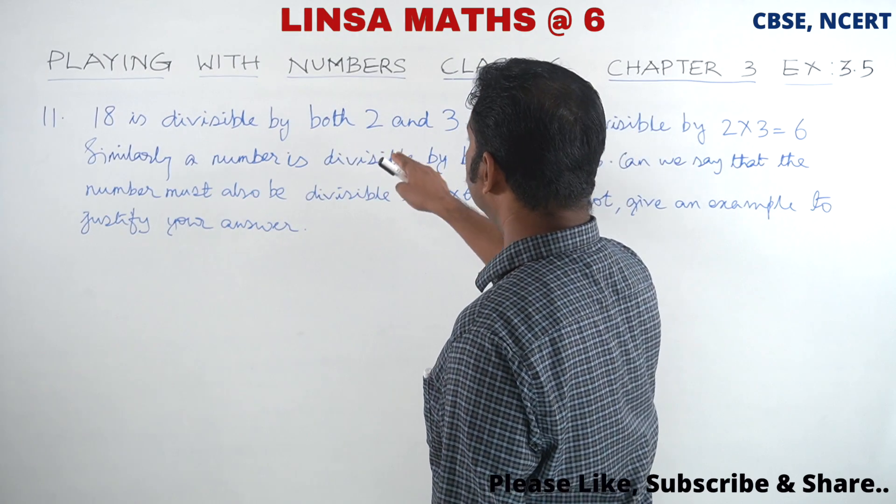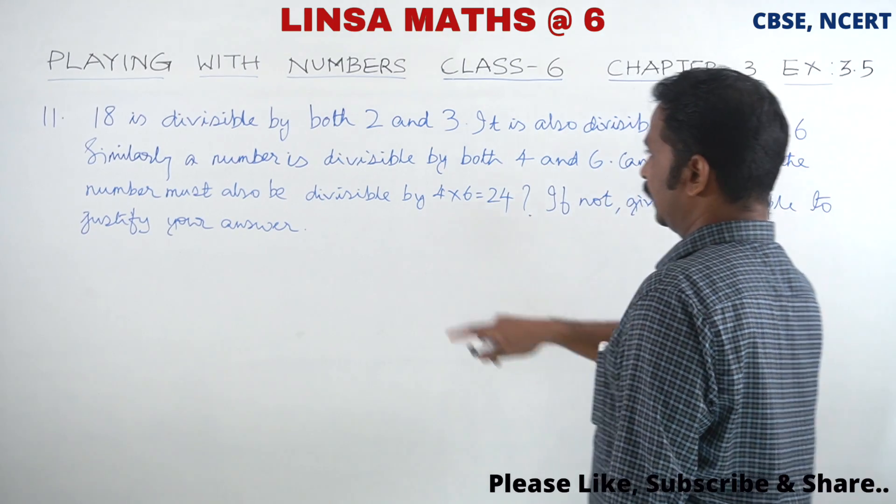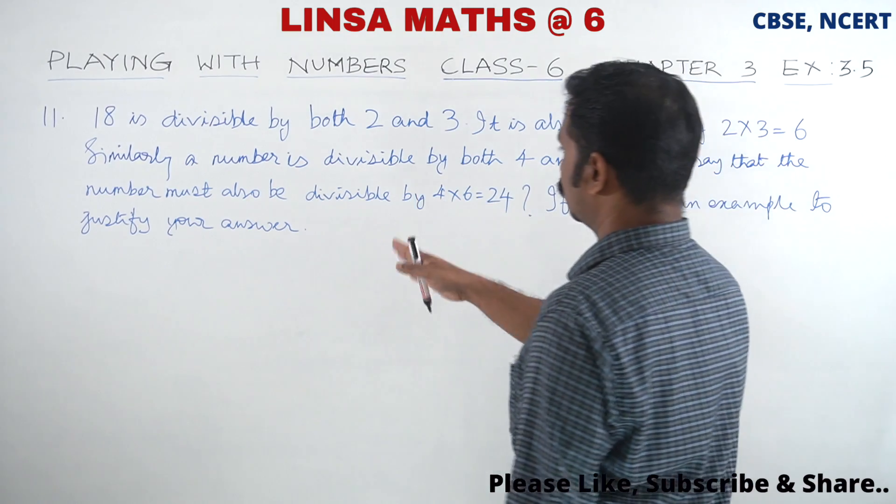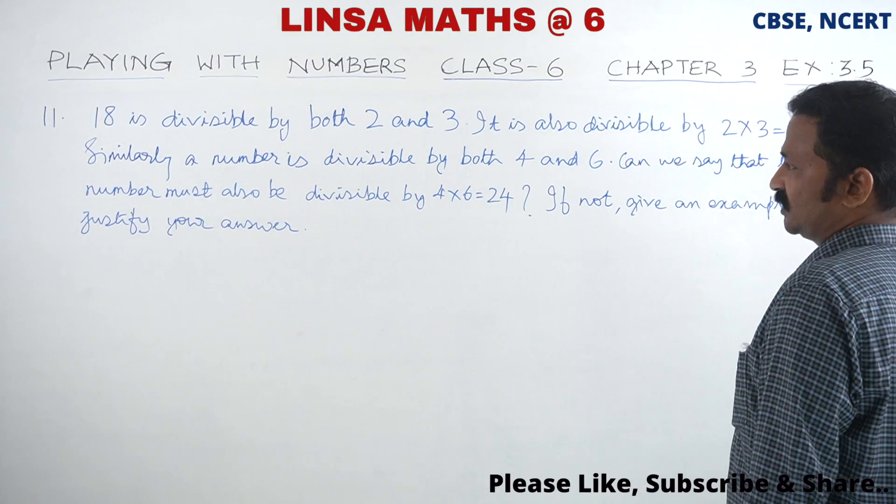18 is divisible by both 2 and 3. It is also divisible by 2 into 3 equals 6. Similarly, a number is divisible by both 4 and 6. Can we say that the number must also be divisible by 4 into 6 equals 24? If not, give an example to justify your answer.